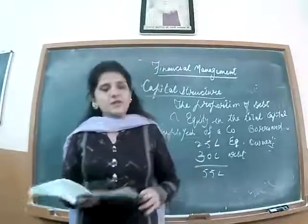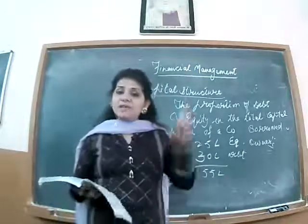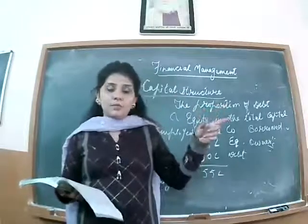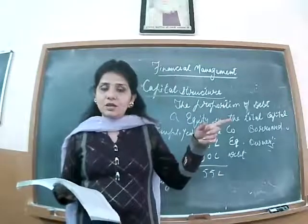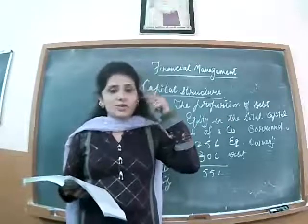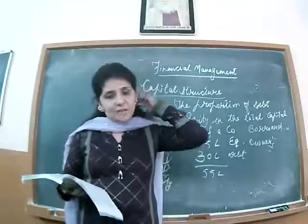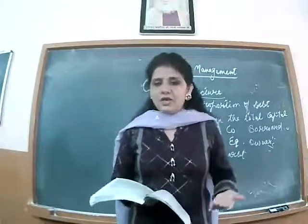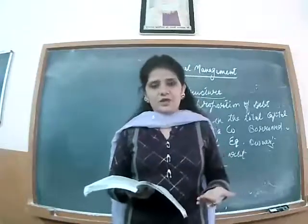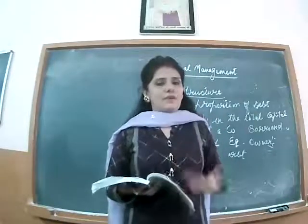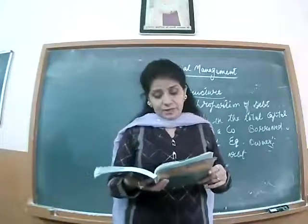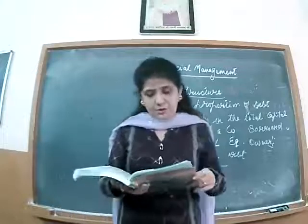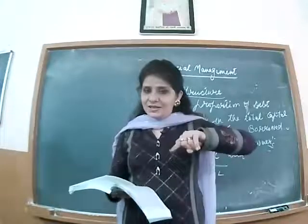He is not calling debt the cheapest overall, because the cheapest is retained earnings — deploying back the profit, which you learned in plus-one class sources of finance. This is your own self-generated source of finance; you don't have to return it to anyone or pay interest on it. This is the cheapest source of finance. If I talk about the cheaper external source of finance, then it is debt.